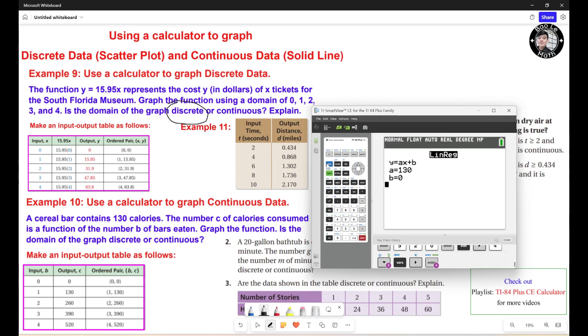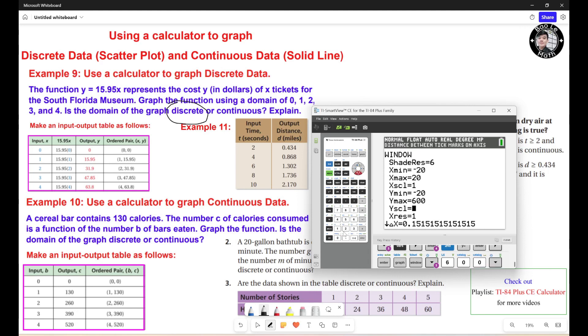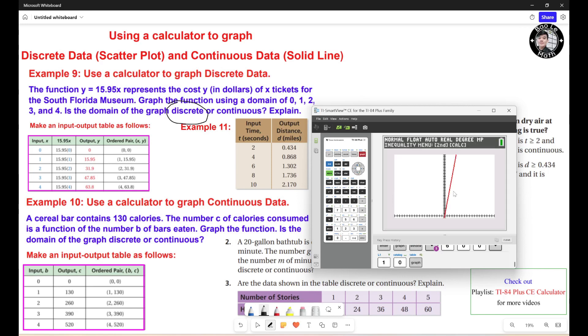So in order to graph this one, you need to hit second Y equals. You need to turn this one off. We don't need scatter plot for the second one because it is continuous. We hit enter. Turn this one off. And then now you hit graph. It's gonna be right here. Now, we just adjust the window range because the output is pretty big. I'm gonna adjust the window range. The output right here, the maximum is 520. So I'm gonna put like 600. And then the scale right here, I'm gonna put like 10. Hit graph is right here.